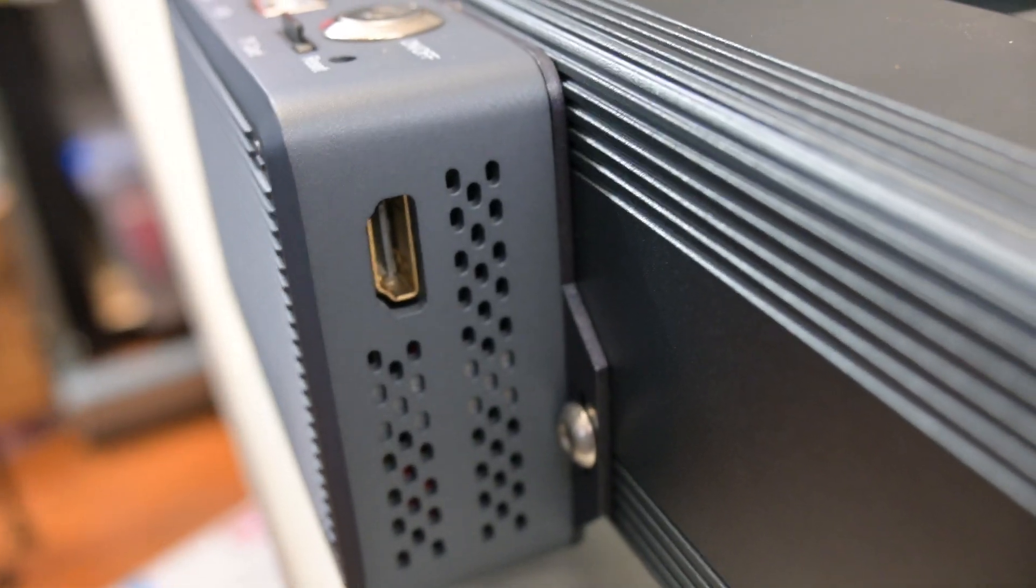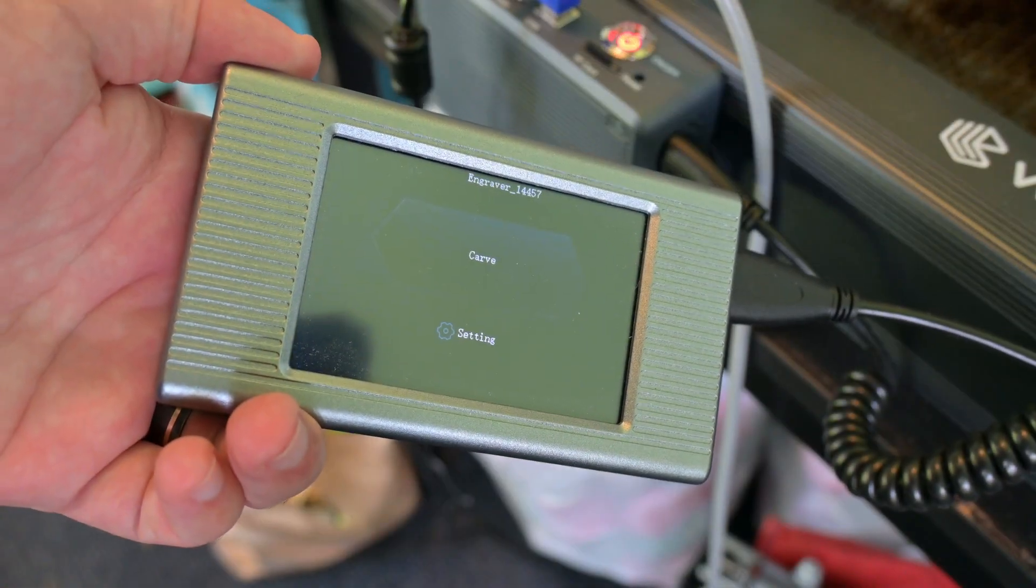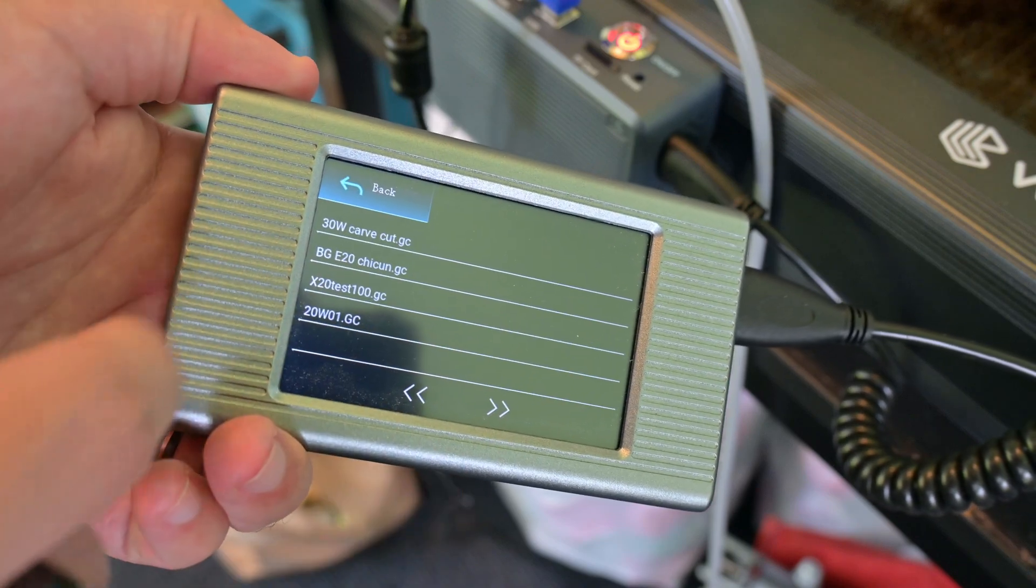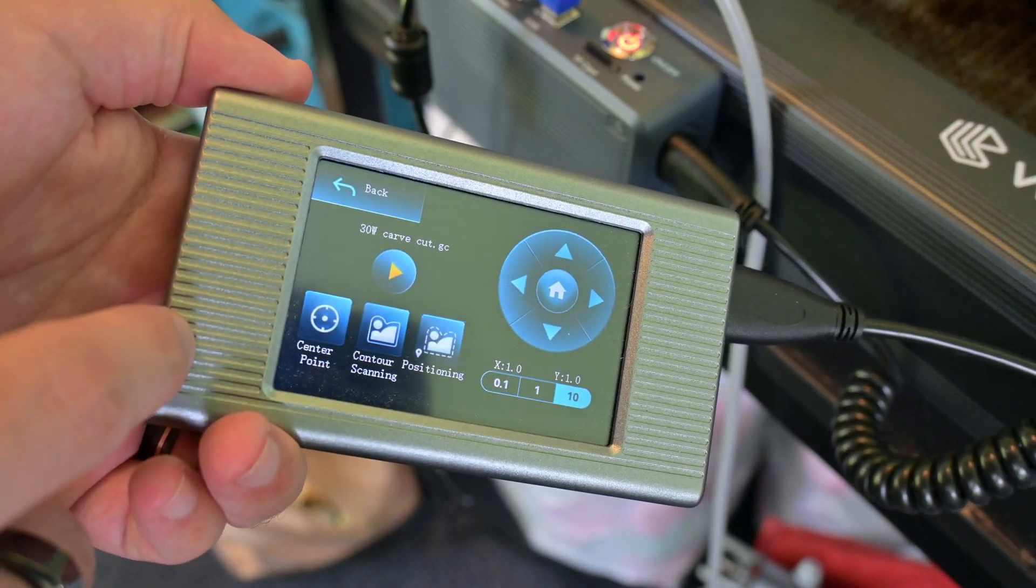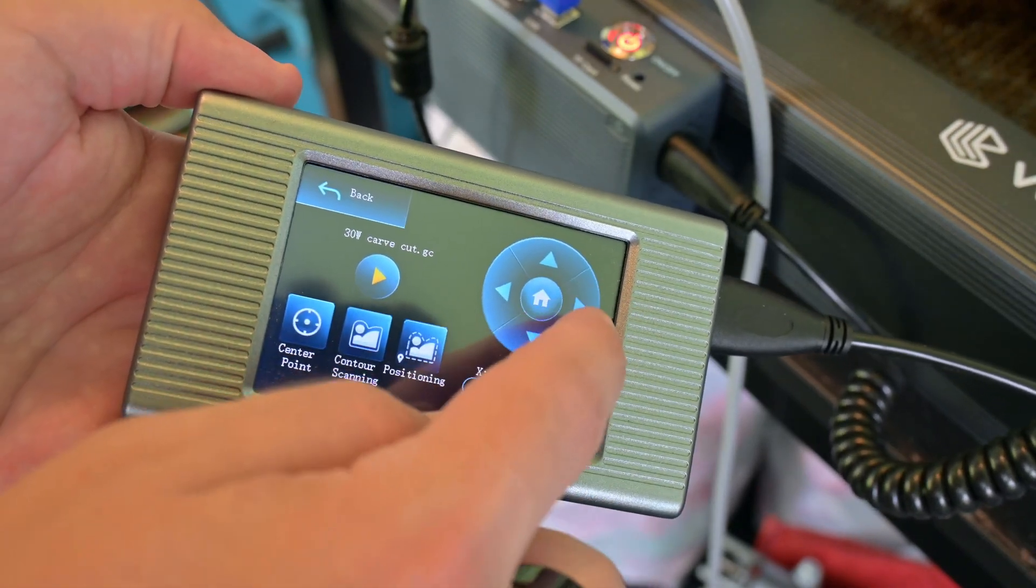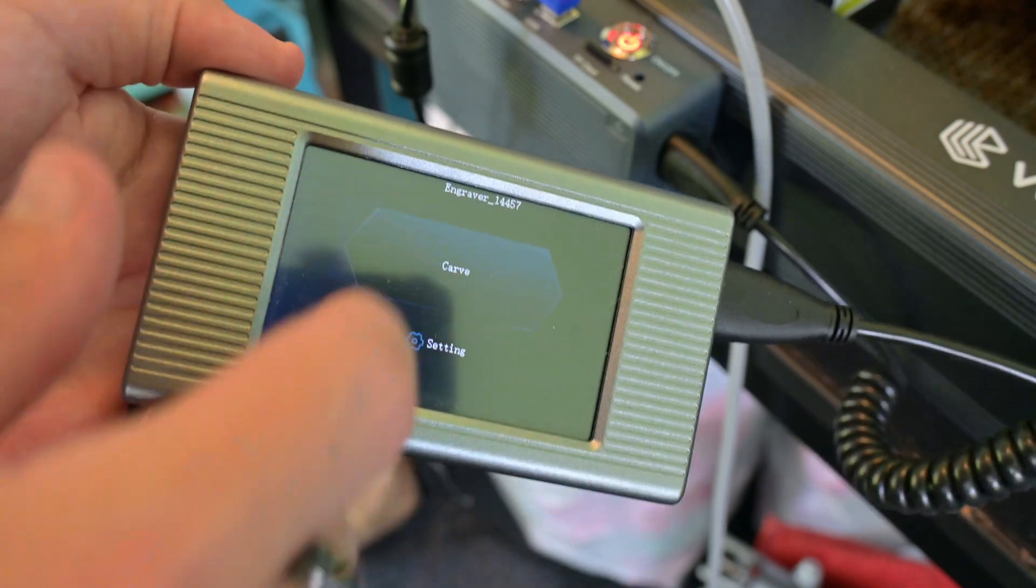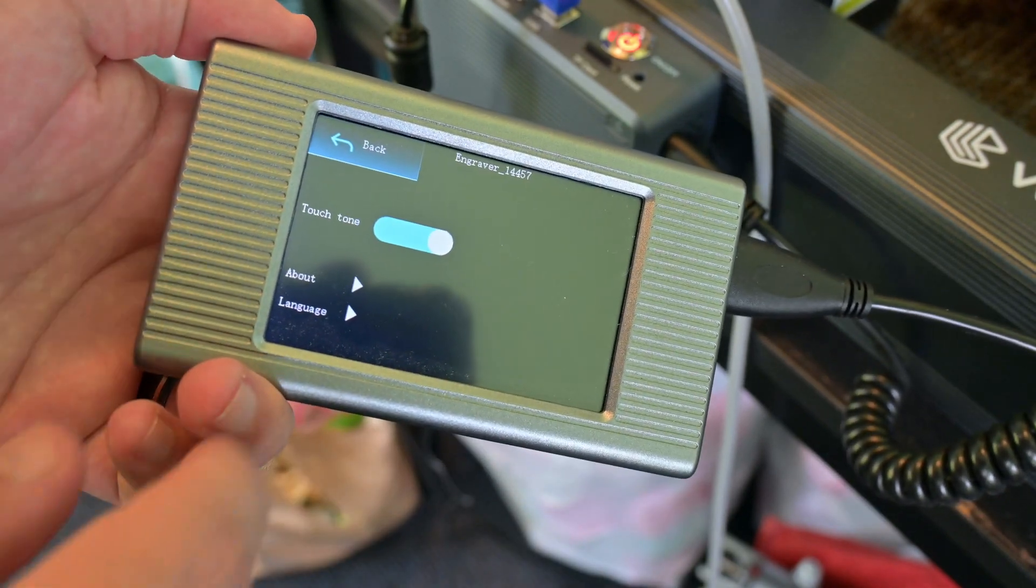On the side of the machine is an HDMI port for an external touchscreen display. One is not included with the engraver, but if you purchase one from another vendor then it can be used to control the laser. It would also allow you to start cuts saved to the SD card, so you do not have to be tethered to a computer.